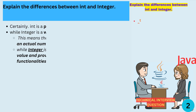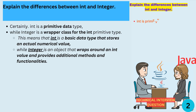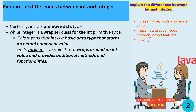Explain the differences between int and Integer. Int is a primitive data type, while Integer is a wrapper class for the int primitive type. This means that int is a basic data type that stores an actual numerical value, while Integer is an object that wraps around an int value and provides additional methods and functionalities.